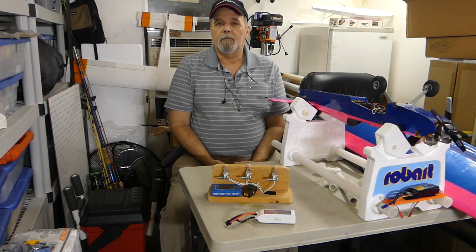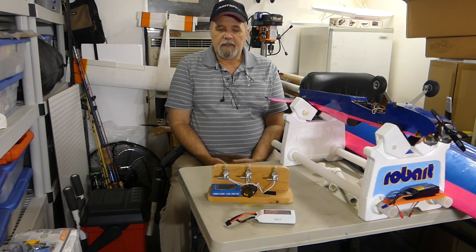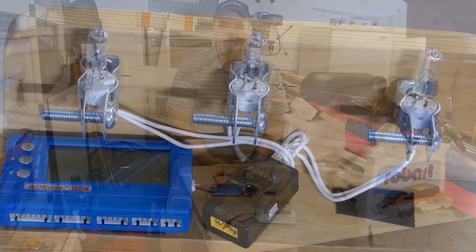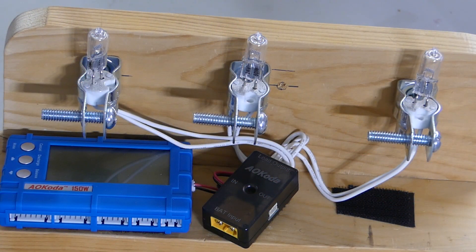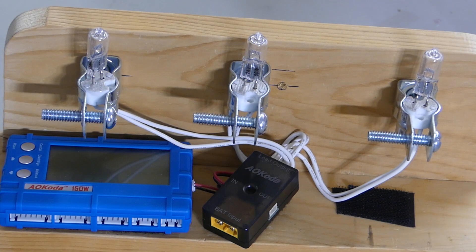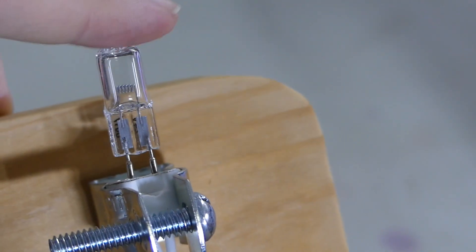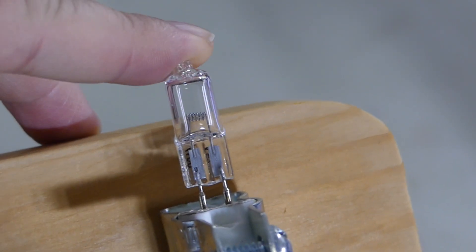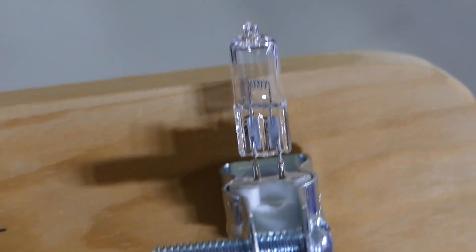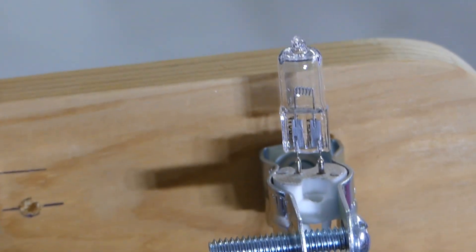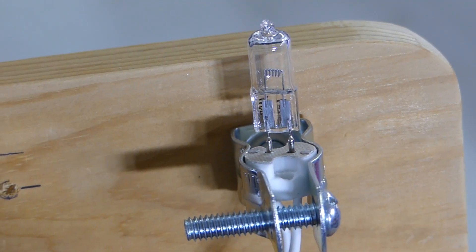It's kind of Frankenstein looking, but there's a reason for that. If you look at these bulbs, these bulbs get extremely hot. I mean, we're talking melt the flesh off of a zombie hot. Literally, it'll burn your house down if you just laid it down on the table.